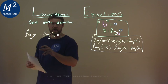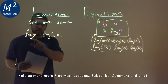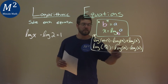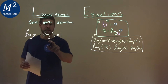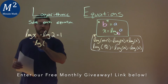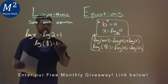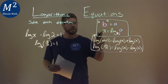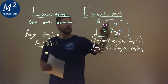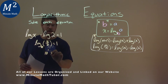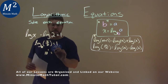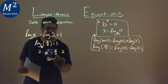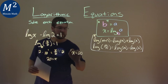We're given this problem: log of x minus log of 2 equals 1, and we need to solve it. These logs have the same base of 10. Our formula says log of m minus log of n equals log of m divided by n. So log of x minus log of 2 is log of x divided by 2, and that equals 1. This is log base 10. Using our formula, 10 to the 1st power equals x over 2. 10 to the first power is 10, so multiply both sides by 2: 10 times 2 is 20. x equals 20 is my final answer.